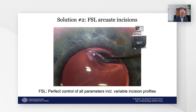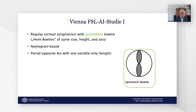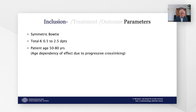Femtosecond lasers allow for perfect control of all incision parameters, including a multitude of variable incision profiles. In a first study conducted at the Vienna Medical University, we treated eyes with regular symmetric corneal astigmatism. Treatment was nomogram-based and arcuate incisions only varied in length. Inclusion criteria were a symmetric bow tie, a total K between 0.5 and 2.5 diopters, and a patient age between 50 and 89 years.